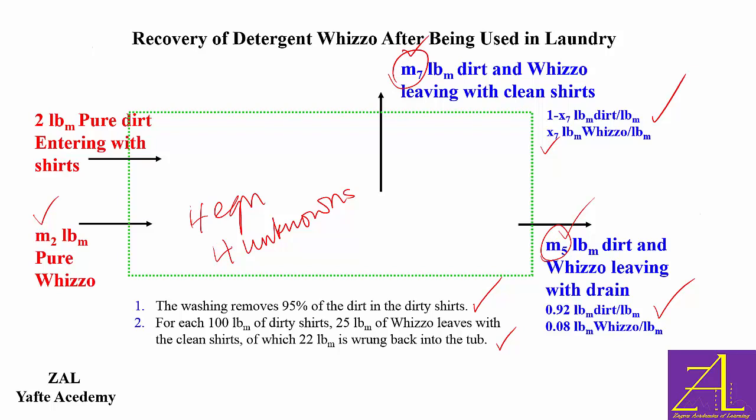After solving, all unknowns will be considered known for the next step — the degree of freedom analysis for another system. With the solution of this system, one of the questions in the problem, which was m2, is already answered.